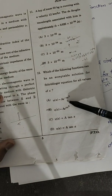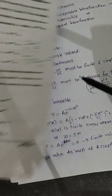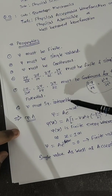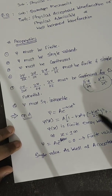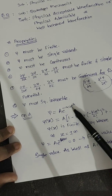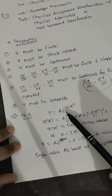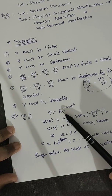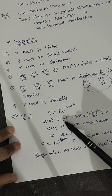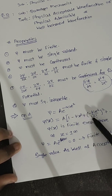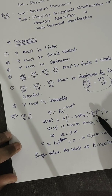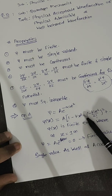Now we will discuss option number one. Option A: psi is equal to A e to the power minus alpha x squared. When we expand this exponential term, we get 1 minus kx squared plus terms involving minus kx squared upon 2 factorial, and so on.